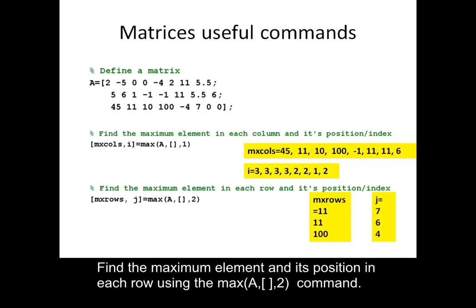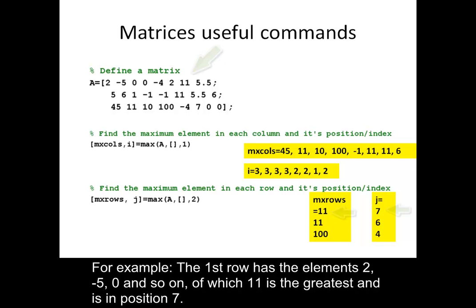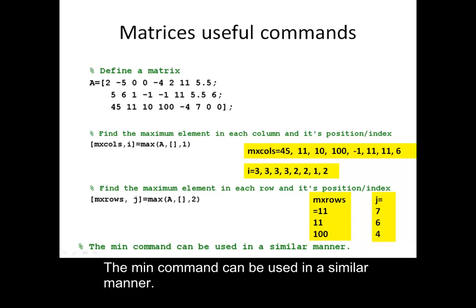Find the maximum element and its position in each row using the max(A,[],2) command. For example, the first row has the elements 2, minus 5, 0, and so on, of which 11 is the greatest and is in position 7. The min command can be used in a similar manner.